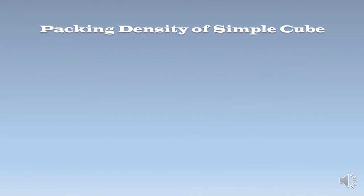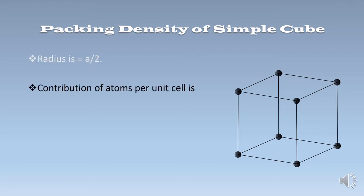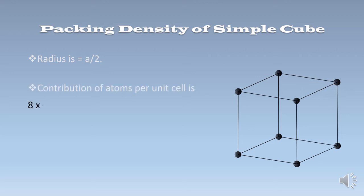In this slide, we discuss the packing density of the simple cube. This is the simple cube structure. We see here that 8 corner atoms are present. The radius of the simple cube is A/2. The total 8 corner atoms are present, so the contribution of atoms per unit cell is 8 × (1/8), which equals 1. So the contribution of atoms per unit cell is 1.